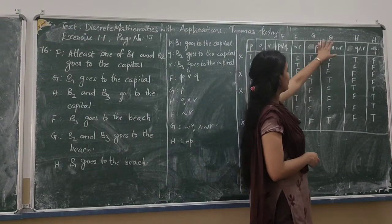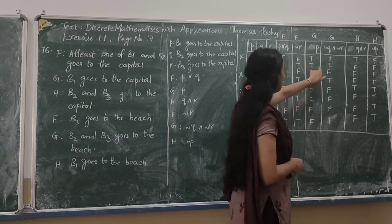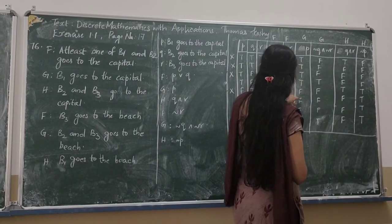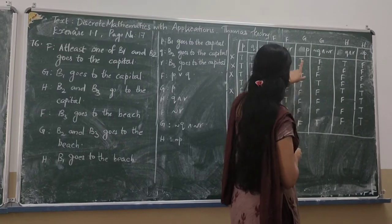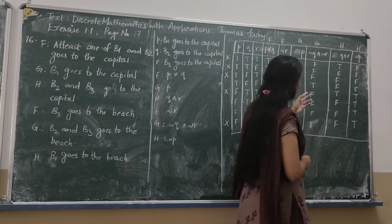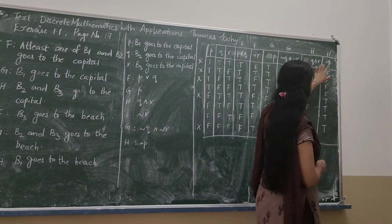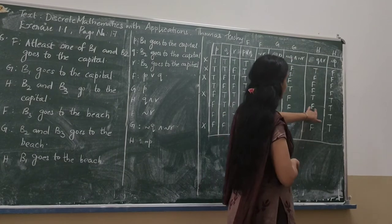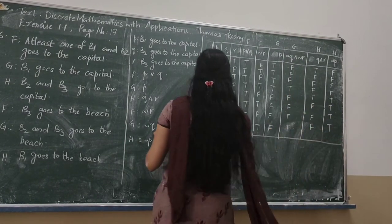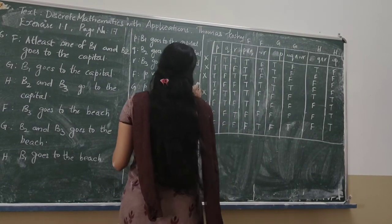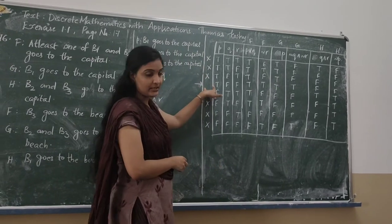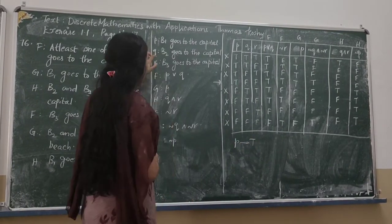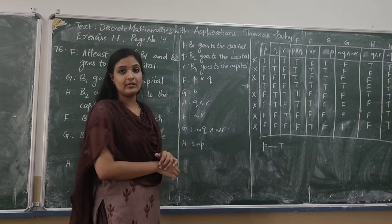Considering G's columns, in the second row G says a true and a false statement simultaneously, so we eliminate that row. Considering H's statements, we eliminate the first row and the last three rows. Hence the remaining valid row is the third row: P is true, Q is false, R is false. So B1 goes to the capital, and LN takes bus B1 to go to the capital.